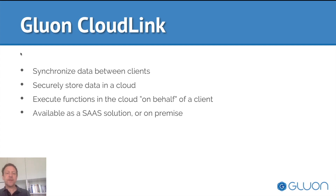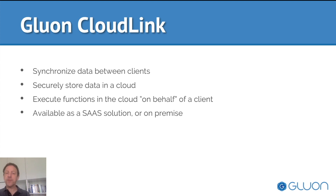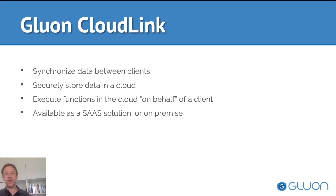Gluon CloudLink synchronizes data between different clients and can securely store data in the cloud of your choice. So Gluon CloudLink interoperates with all major cloud vendors. It is not a replacement for data storage in the cloud — it connects your clients to the cloud without requiring a direct link. It also stores passwords in the cloud and not on the client. And it can execute functions on behalf of a client in the cloud: you simply invoke a function with a name and some parameters, and the real execution is done in the cloud.